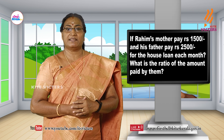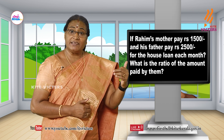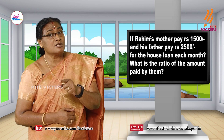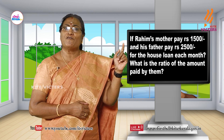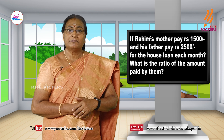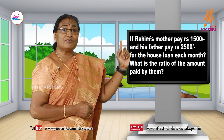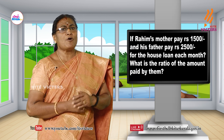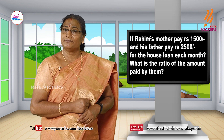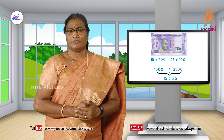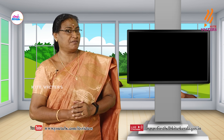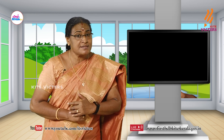If Rahim's mother pays rupees 1500 and his father pays rupees 2500 for the house loan each month, what is the ratio of the amount paid by them? It can be written as 1500 is to 2500. How many hundreds are there in 1500? It is 15. And how many hundreds in 2500? It is 25. So the ratio becomes 15 is to 25, and the simplest form of ratio becomes 3 is to 5.